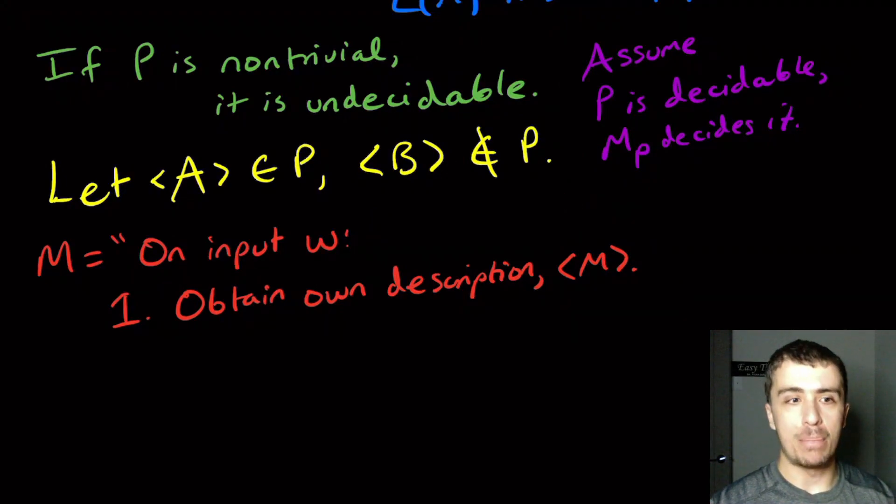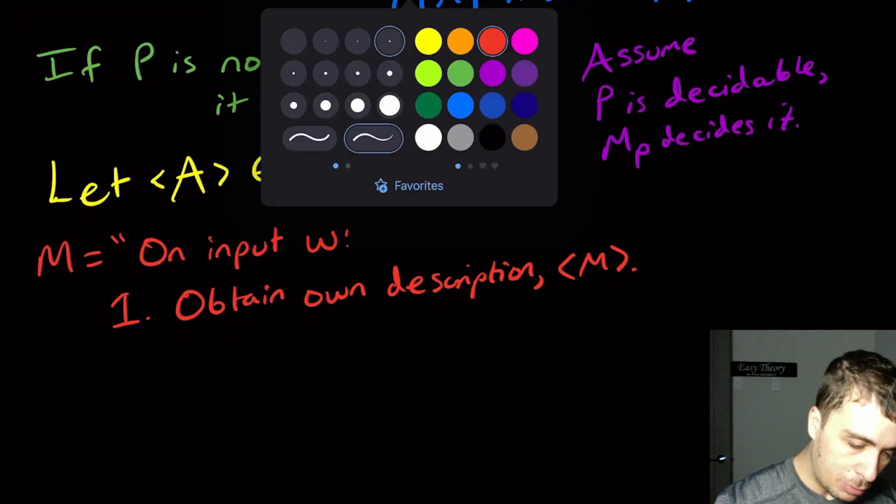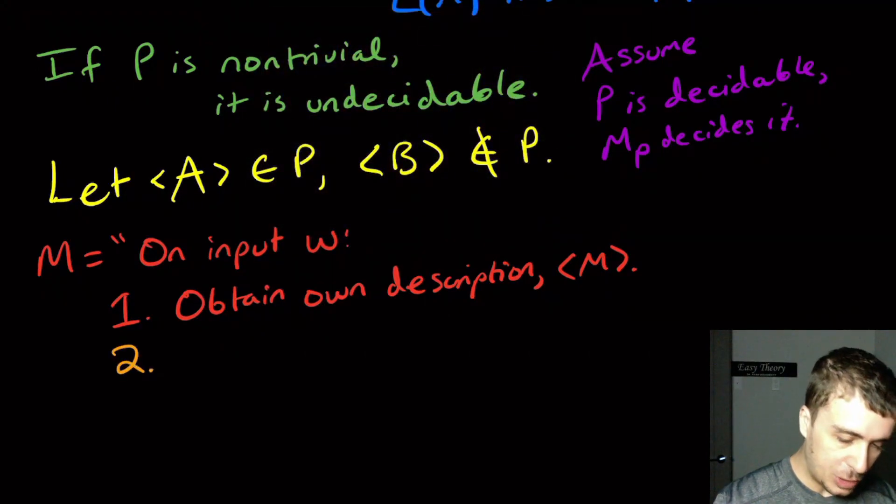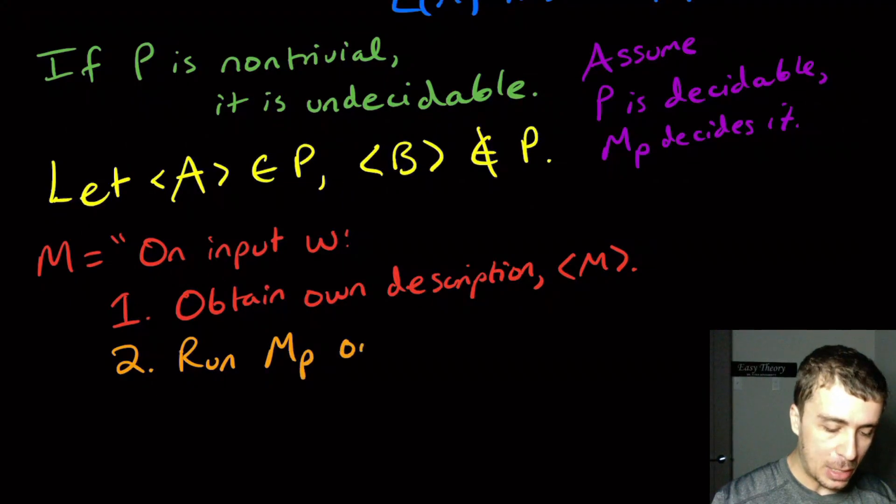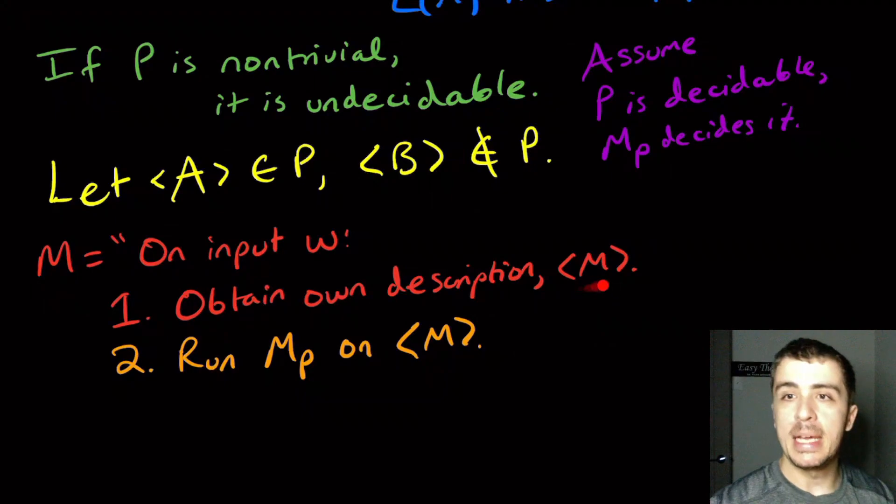For step two, I'm going to run this MP decider on <M> because we were able to obtain our own description. I'm going to have this decider figure out whether this thing has the property or not.